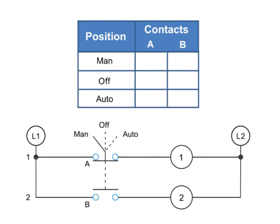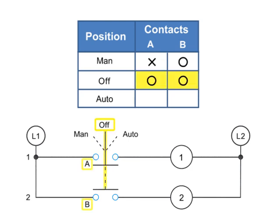In this illustration of a three-position selector switch, a third row is added to the truth table. We now have a manual position, an OFF position, and an AUTO. Thus, in the MAN position, A is X or closed and B is O or open. At the OFF position, both A and B are O or open. With the selector switch set to AUTO, contact A is O or open and B is X or closed.